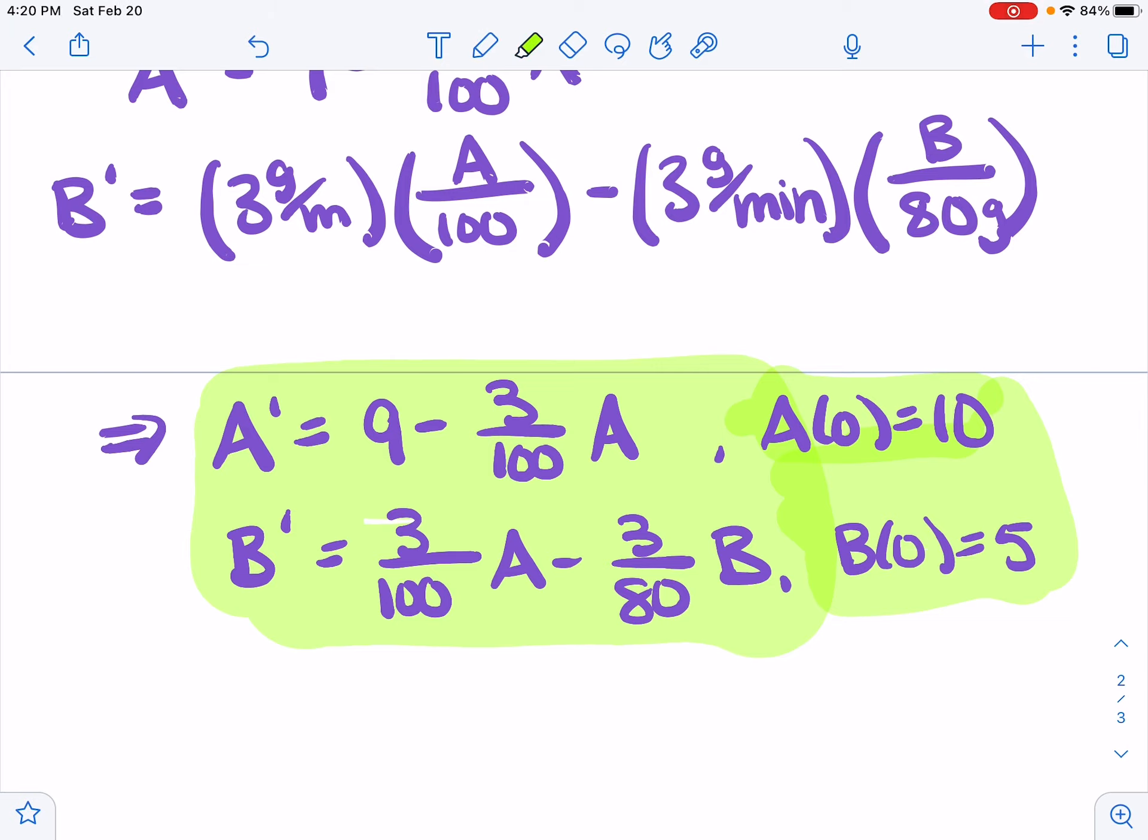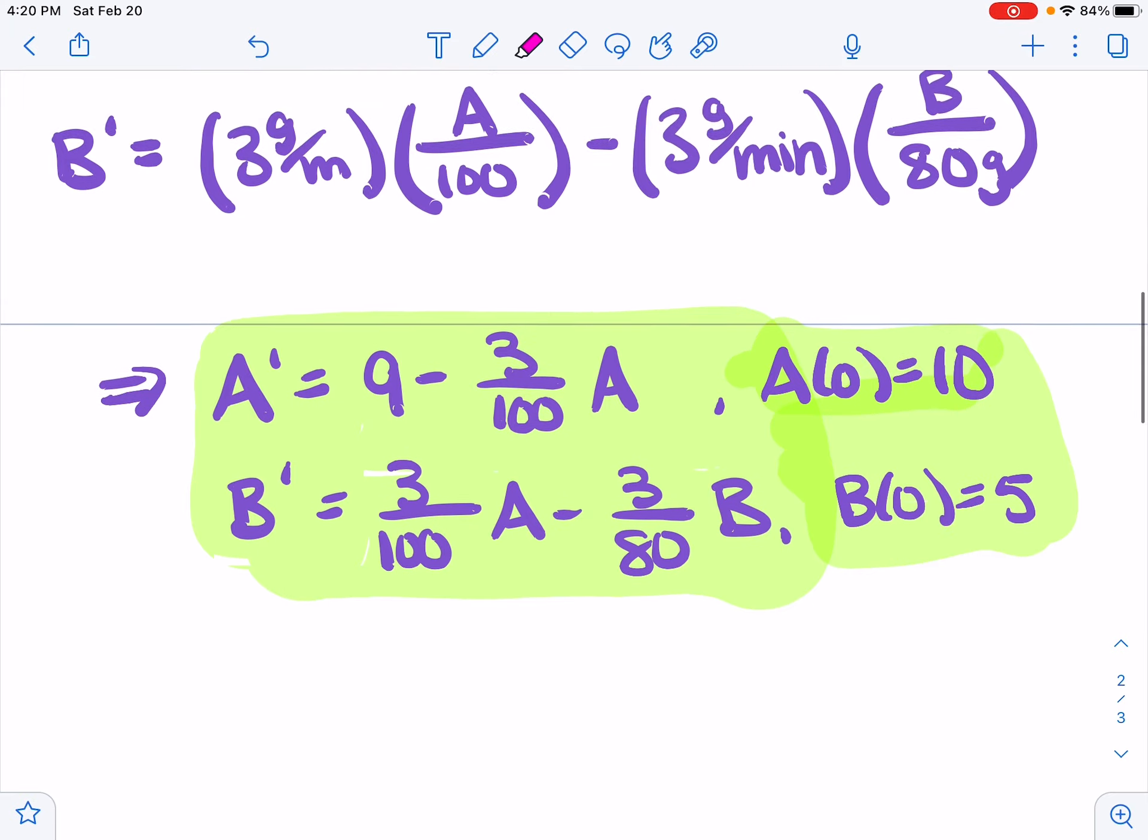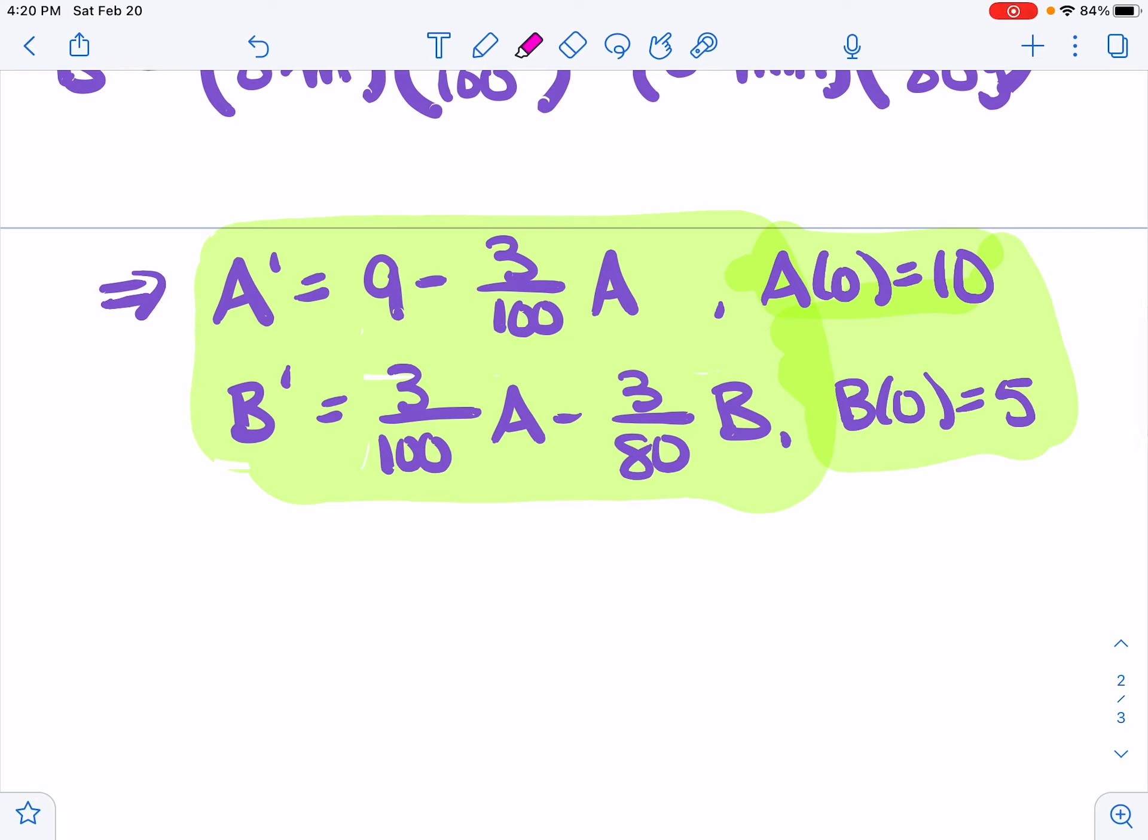These equations are connected in some way because the rate of change of B depends on both A and B. The rate of change of A only depends on A, and that's going to be what allows us to solve in this case. This is a simpler system than some. It's not fully coupled like some systems, and so we're able to solve it.